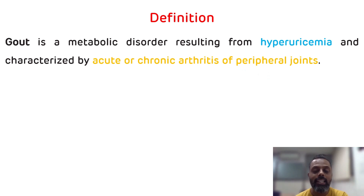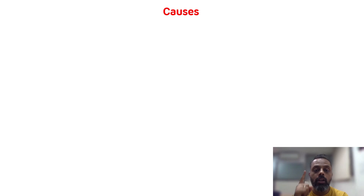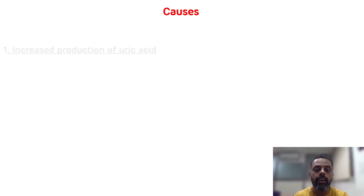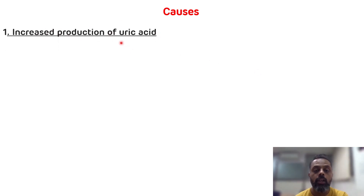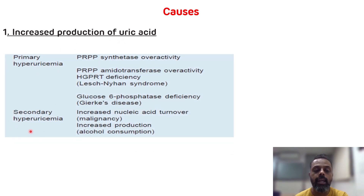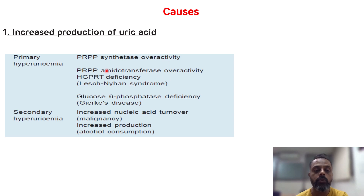Now we will see the etiology of gout. Gout basically occurs due to increased production of uric acid and decreased excretion of uric acid. First we will see causes related to increased production of uric acid, divided into two headings: primary hyperuricemia and secondary hyperuricemia. The causes for primary hyperuricemia are increased PRPP synthetase activity and increased PRPP amidotransferase over-activity, that is phosphoribosyl pyrophosphate amidotransferase over-activity.